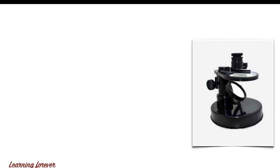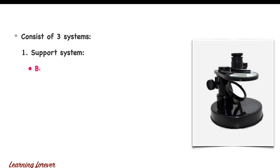Whereas in the lab, we use a well-designed simple microscope. It consists of three systems. First, the support system, which plays a role in supporting the function of the microscope. This includes the base, which keeps the microscope in an upright position; the body tube, which provides support to hold the stage, mirror, and eyepiece; and the stage, which helps in keeping the slide or object below the eyepiece lens. Since base, body tube, and stage support the other two systems, these are called the supporting system of the simple microscope.